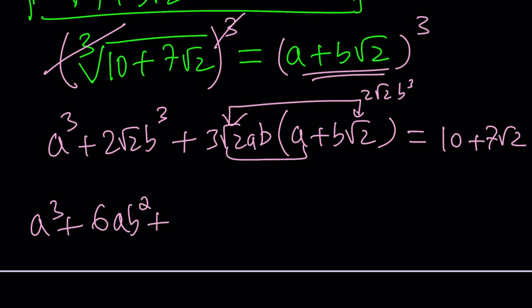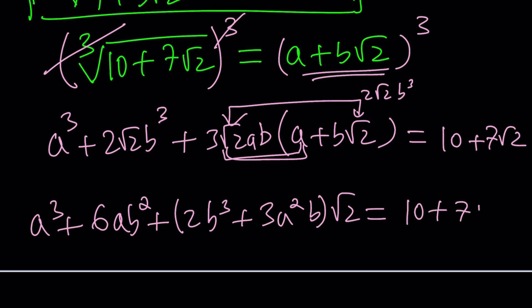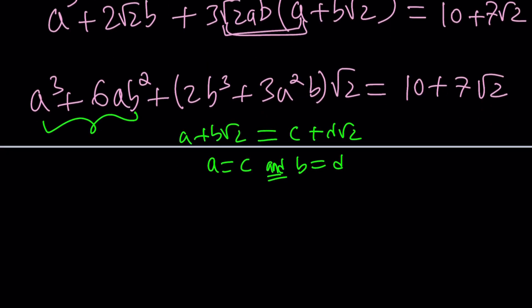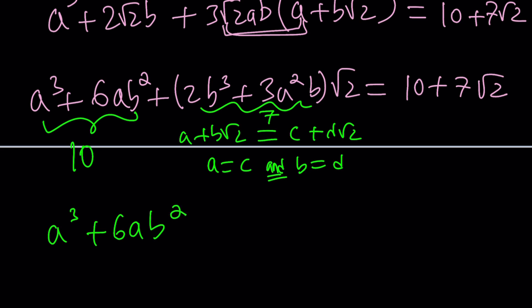Expanding and separating rational and irrational parts: the rational part is a³ + 6ab² and the irrational part is (2b³ + 3a²b)√2. Since these must equal 10 + 7√2, and if two expressions of the form p + q√2 are equal with integer coefficients, then p = p and q = q. This gives us a system: a³ + 6ab² = 10 and 2b³ + 3a²b = 7.